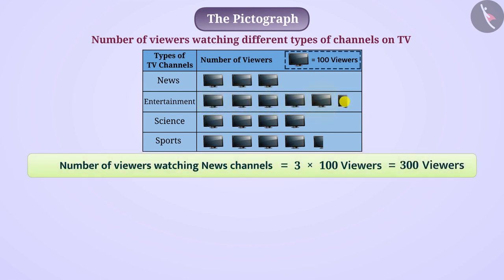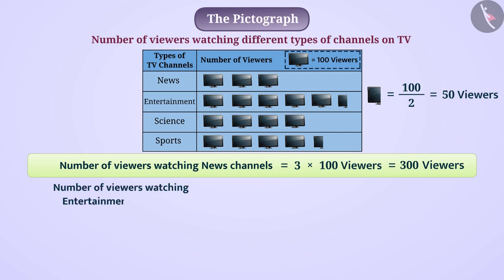5 full and one half image have been used to represent the viewers of the entertainment channel. Since the value of one full picture is 100 viewers, we can take the value of half a picture as half of 100, that is 50 viewers. So the number of viewers of the entertainment channel will be 5 multiplied by 100 plus 50, which equals 550 viewers.